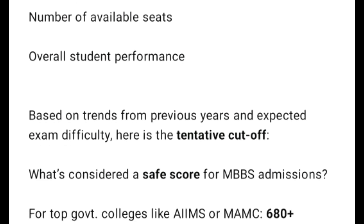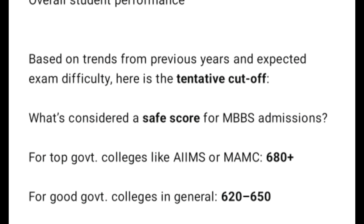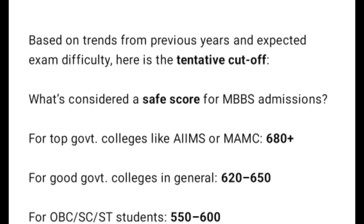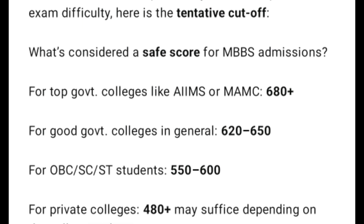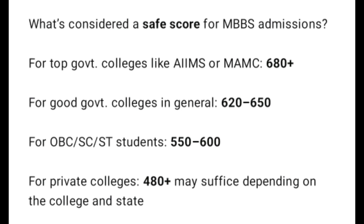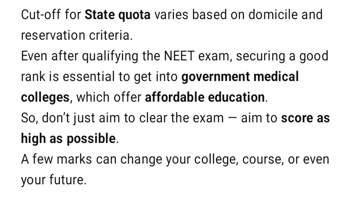Based on trends from previous years and expected exam difficulty, here is the tentative cutoff. For top government colleges like AIIMS or MAMC, a score of 680+ is needed. For good government colleges in general, 620–650. For OBC/SC/ST students, 550–600. For private colleges, 480+ may suffice depending on the college and state. Cutoff for state quota varies based on domicile and reservation criteria. Even after qualifying, securing a good rank is essential to get into government medical colleges, which offer affordable education. Don't just aim to clear the exam — aim to score as high as possible.